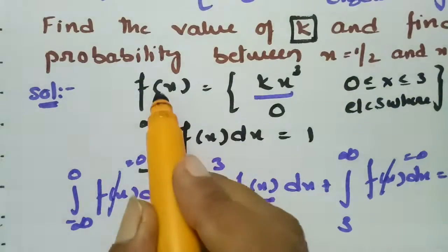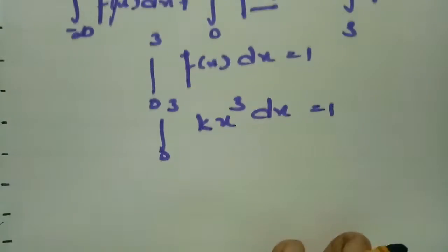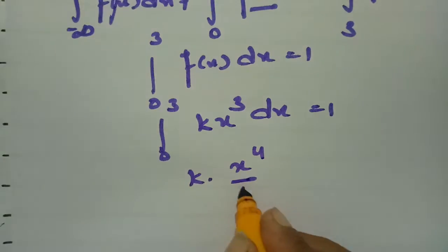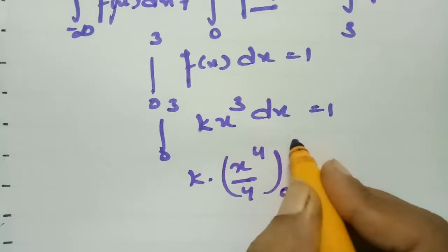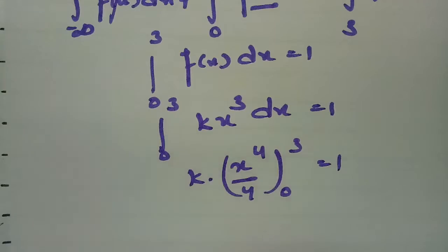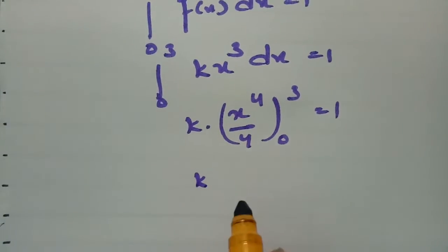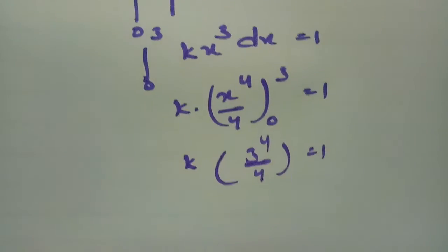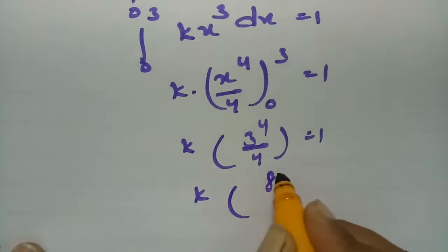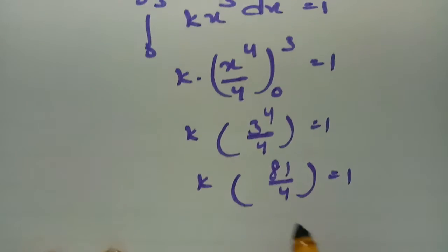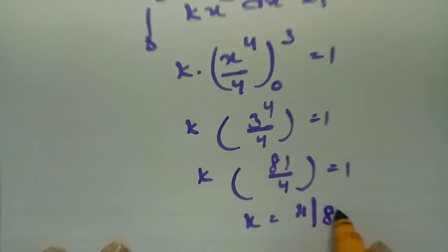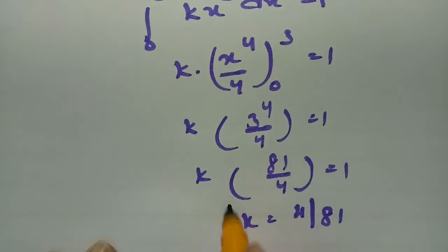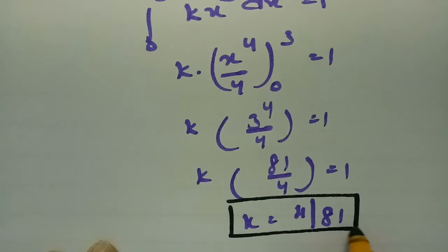Since f(x) = k·x³, we integrate: k times x⁴/4 evaluated between 0 and 3 equals 1. Substituting the upper limit gives k times 3⁴/4 = 1, which is k times 81/4 = 1. Therefore k = 4/81.